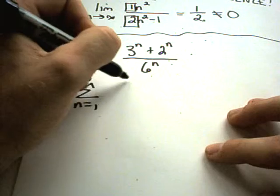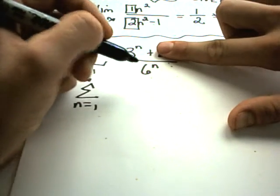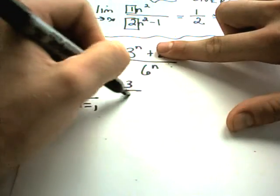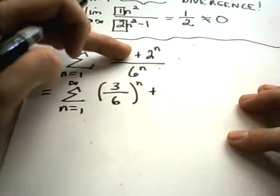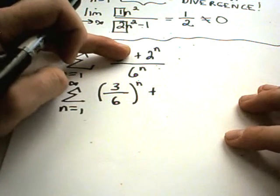I'm going to break up my fraction. I'm going to make this 3 to the n over 6 to the n, which I can write as 3 over 6 to the n power, plus I can break it up again, 2 to the n over 6 to the n.